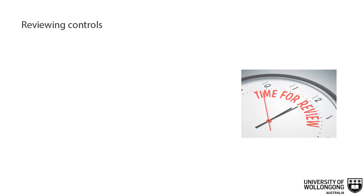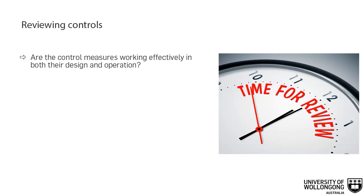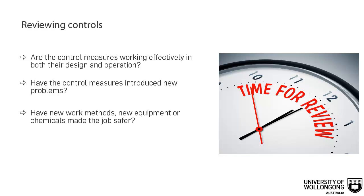It is important to review any controls that have been put into place. When conducting a review, ask yourself the following: are the control measures working effectively in both their design and operation? Have the control measures introduced new problems? Have new work methods, new equipment, or chemicals made the job safer? Is the safety procedure being followed?